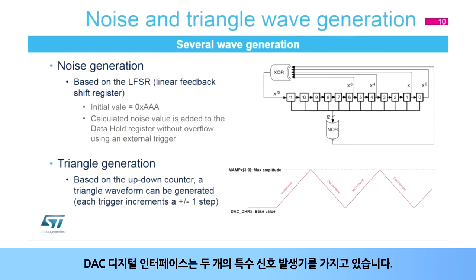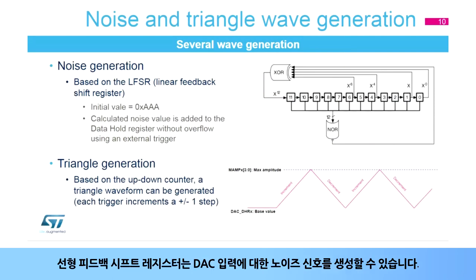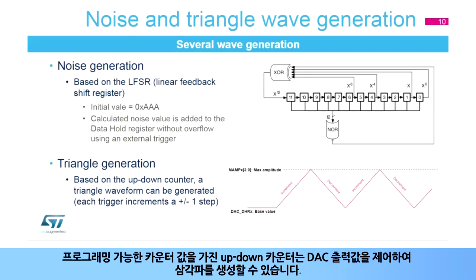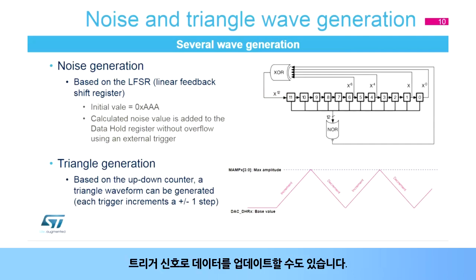The DAC digital interface integrates two special signal generators. The linear feedback shift register can create the noise signal for the DAC input. Each trigger updates the DAC output data by an LFSR block. The up-down counter with a programmable count value can create triangle wave data, which can update the DAC output data. The data can also be updated by a trigger signal.